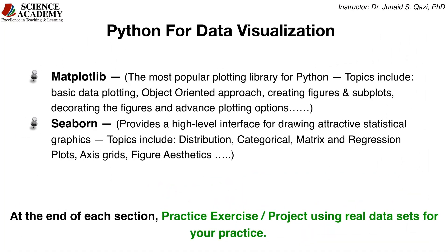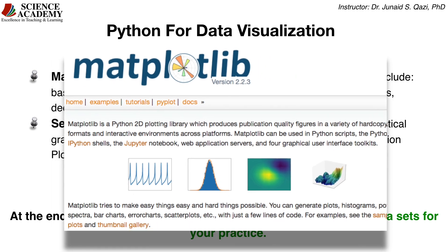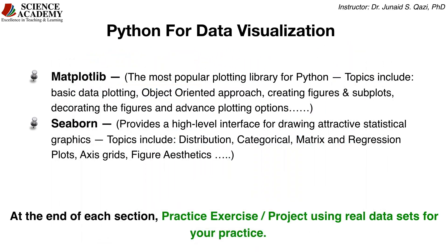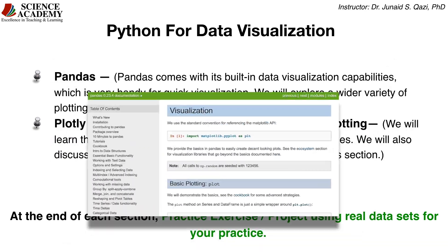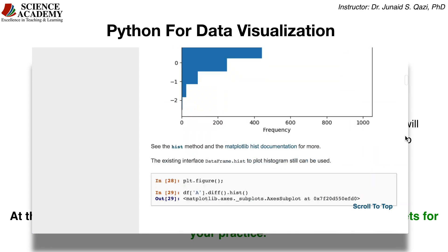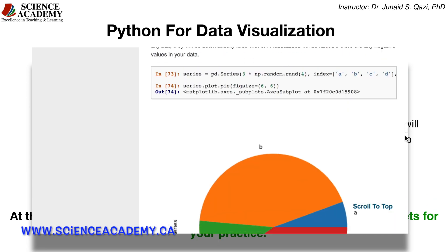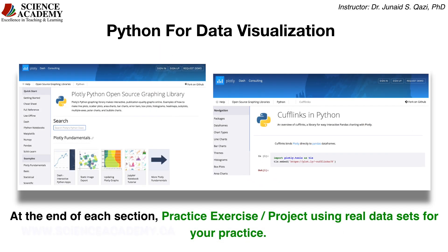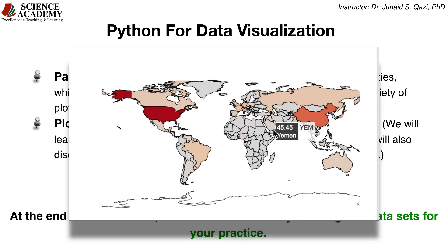After getting solid data analysis skills, we will move on to the data visualization section. Data visualization has significant importance in the field of data science, and Python provides great libraries for data visualization. In this section, we will start with matplotlib, which is the most popular plotting library for Python. We will then move on to Seaborn, which provides a high-level interface for drawing attractive statistical graphs. We will then come back to Pandas — this time we will learn data visualization in Pandas, which comes with built-in visualization capabilities very handy for quick visualization. We will then move on to Plotly and Cufflinks for interactive and geographical plotting, and you will learn how easy it is to get interactive plots using these state-of-the-art libraries.